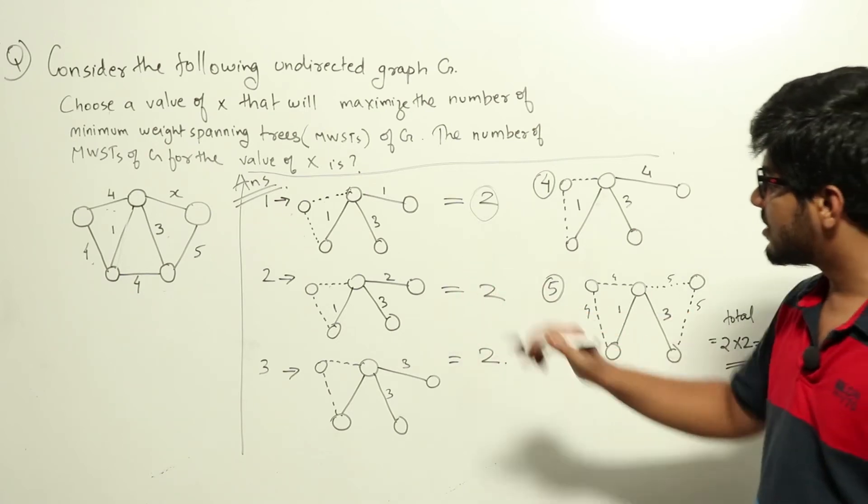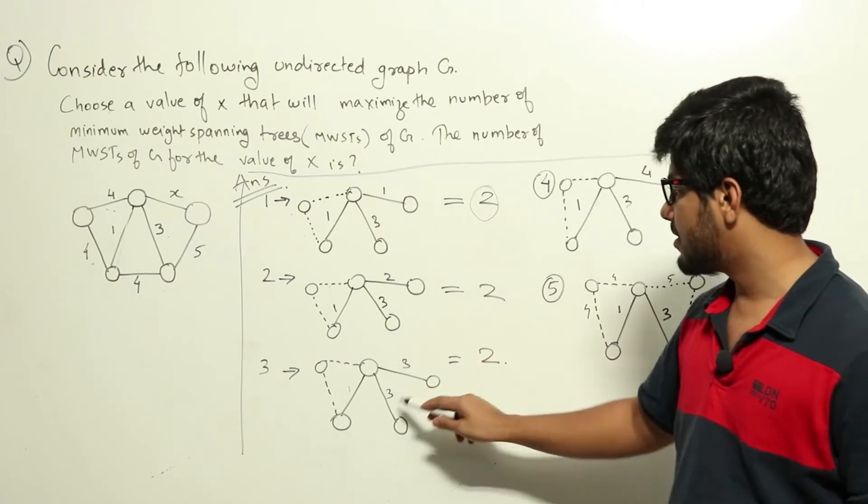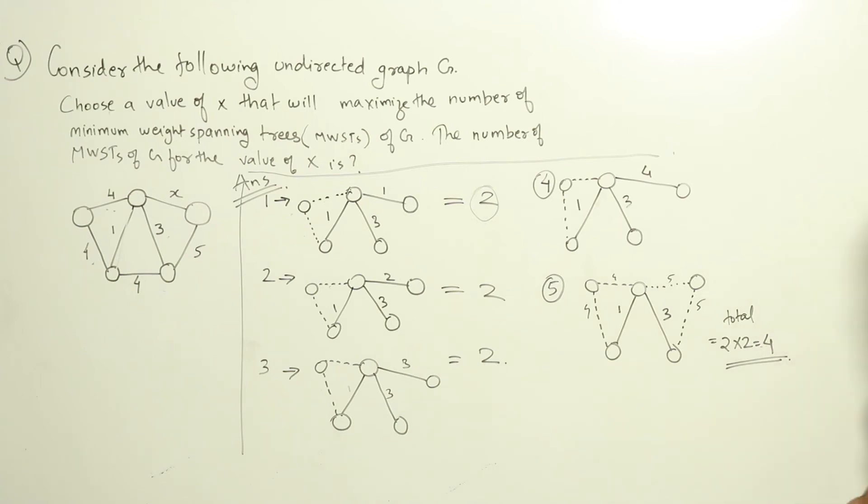And when we are choosing 3 also we will be getting the same graph. This is 1. This will be 3. This will be 3. These two we are choosing. And these two again we can choose. We are getting the same graph. There are two possibilities here.